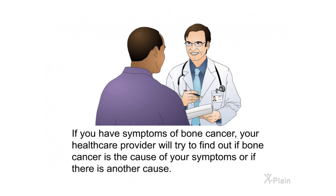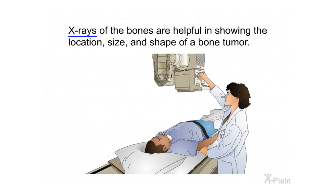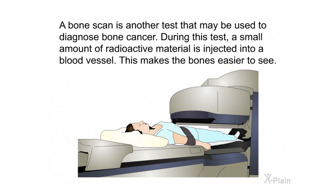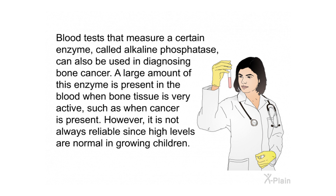If you have symptoms of bone cancer, your health care provider will try to find out if bone cancer is the cause or if there is another cause. They will ask about your family medical history in addition to your own. You may also have blood tests or other lab tests to rule out other causes. A physical exam will be performed, and X-rays of the bones can show the location, size, and shape of a bone tumor. A bone scan may also be used — a small amount of radioactive material is injected into a blood vessel to make the bones easier to see. Other tests include CT scan, MRI, PET scan, and angiogram.